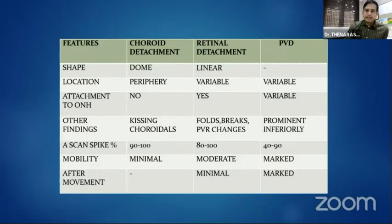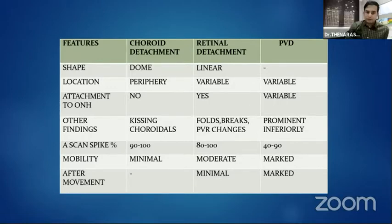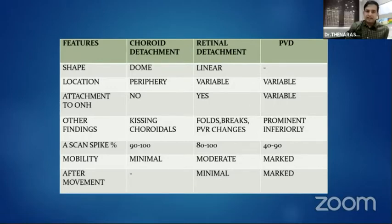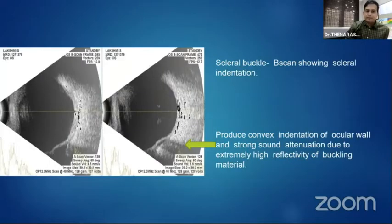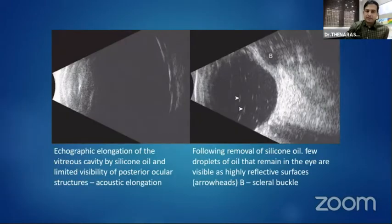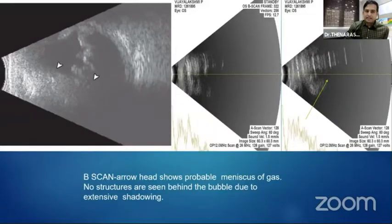For choroidal detachment versus retinal detachment: choroidal detachment is usually restricted towards the periphery, dome-shaped, with very minimal mobility, and can be of serous or hemorrhagic variety. Post-surgically in buckle cases, a buckle indent can be seen. In post-vitrectomized silicon-oil-filled eyes, a retro-silicon-oil space helps in detecting underfilled or overfilled status. In post-vitrectomized gas-filled eyes, extensive shadowing behind the meniscus of gas is visible.